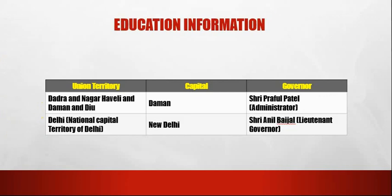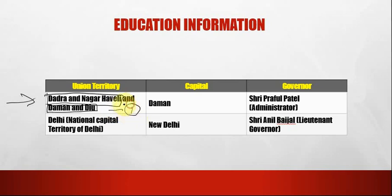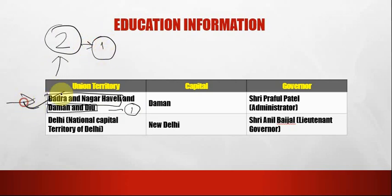The next union territory is Dadra and Nagar Haveli and Daman and Diu. The capital is Daman. This union territory was formed by merging Daman and Diu with Dadra and Nagar Haveli — previously two separate union territories before 28th January 2020. Due to administrative reasons, they were merged into one. The governor is Sri Praful Patel.